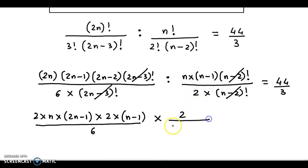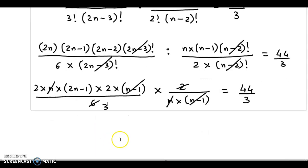So you have 2 upon n(n-1) equals 44 divided by 3. Further cancellations: n gets cancelled out, (n-1) gets cancelled out. So let's see what we are left with.